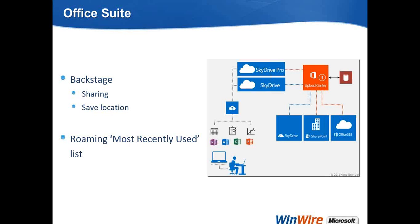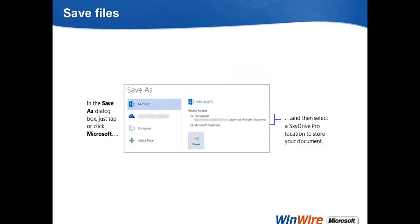We'll see how you can save a file using Office 2013 directly onto SkyDrive Pro and how you can share files using Office 2013. When you use Office 2013, if you see the Save As dialog and click on Microsoft there, it will show you the SkyDrive Pro folder as well. When you're signed into Office 2013 using your Microsoft credentials, it automatically connects you to your SkyDrive Pro library so you can see that library. Directly from Office 2013, you are allowed to save your files onto SkyDrive Pro — that's one of the features of Office 2013 integration with SkyDrive Pro.